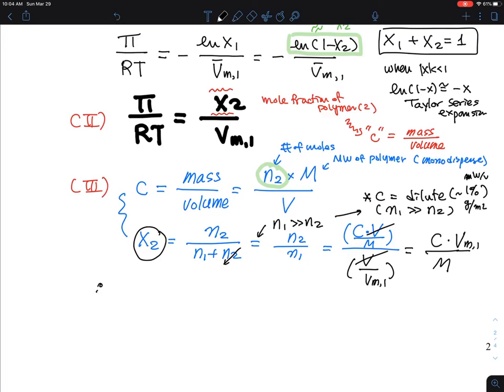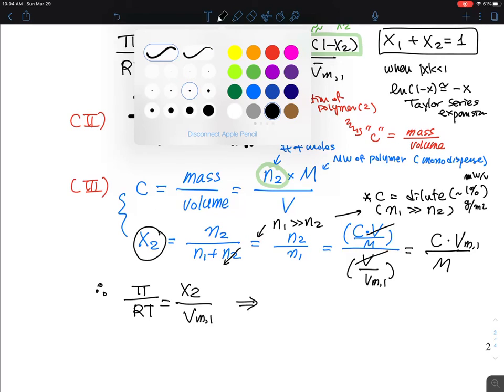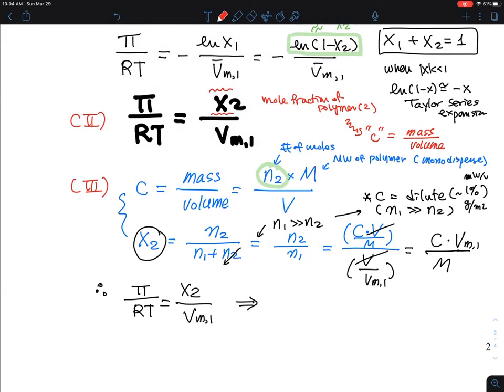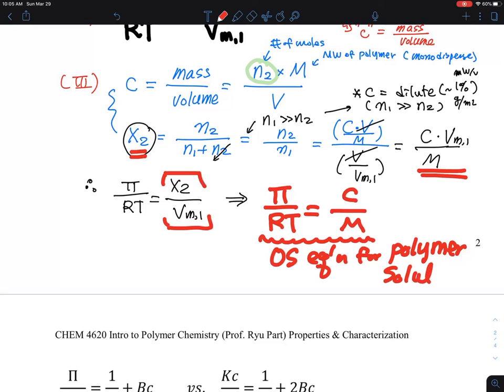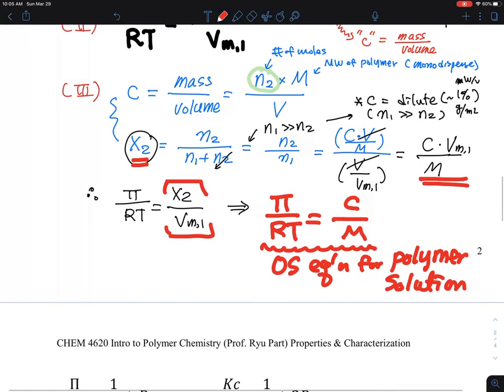So now, this equation therefore, equation above, π/RT, which is x₂/V̄ₘ,₁, which is an equation that I have. Finally, the one that I wanted to show you as a punchline. So π/RT now, you see that x₂ is this value, and we want to use this value from here, and that now becomes C/M. So that's the osmotic pressure equation for polymer solution. And that's how we can relate that.